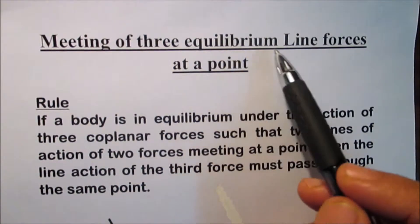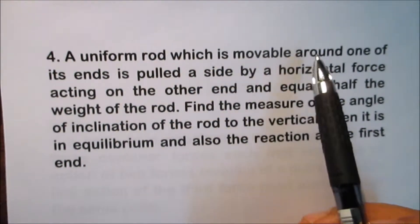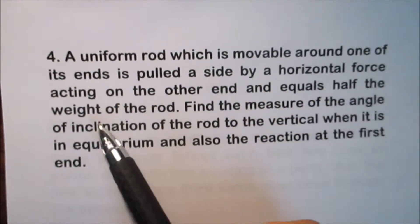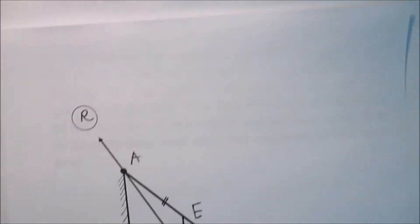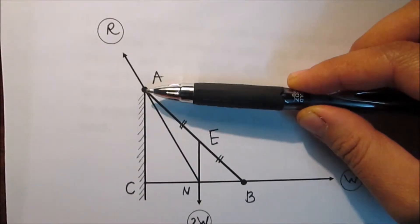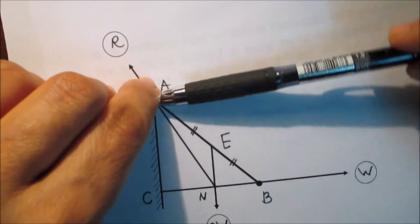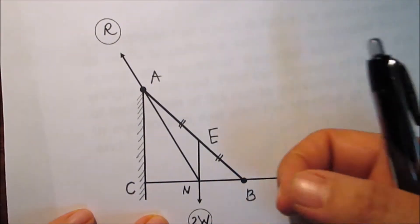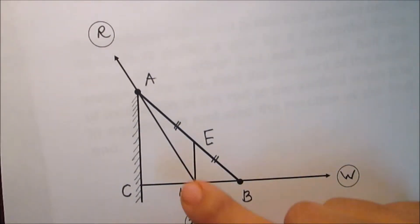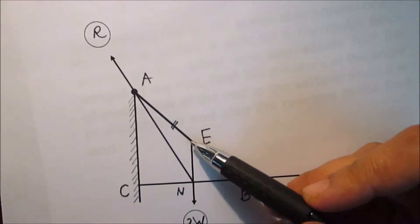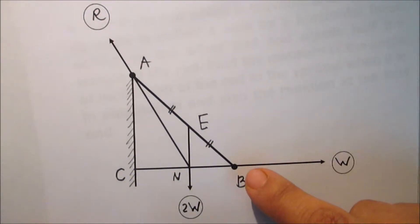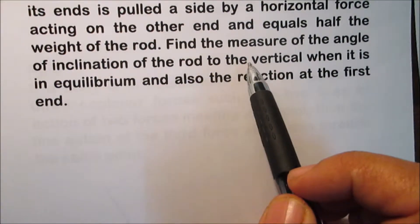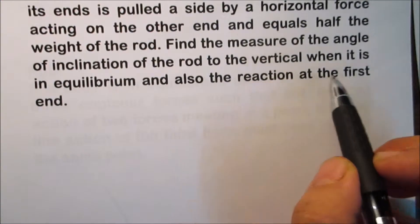Another example on meeting of three equilibrium forces at a point. A uniform rod which is movable around one of its ends is pulled aside by a horizontal force acting on the other end, equal to half the weight of the rod. Assume the weight of the rod to be 2w, so the force applied at the other end equals half the weight, which is w. Find the angle of inclination of the rod to the vertical when in equilibrium, and also the reaction at the first end.